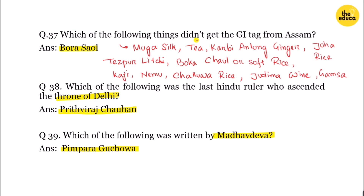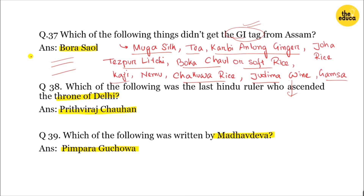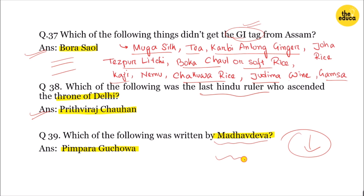Which of the following things did not get the GI Tag from Assam? The next question asks which of the following was the last Hindu ruler who ascended the throne of Delhi. Another question asks which of the following works was written by Madhav Dev.